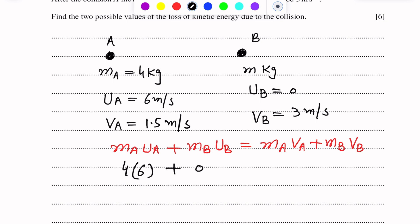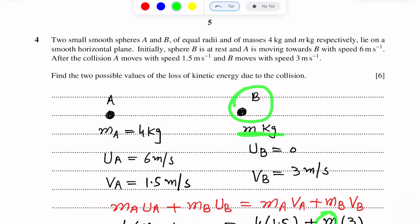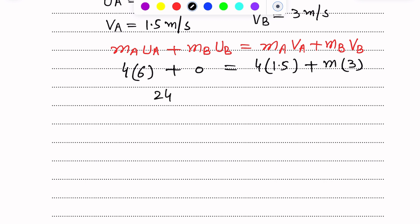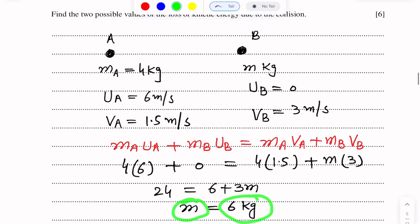MA is 4, VA is 1.5, plus MB — the mass of particle B is m — and speed of particle B is 3. From this equation we can find the value of m. We get 24 equals 6 plus 3m, so m equals 6 kg. This is the mass of particle B.